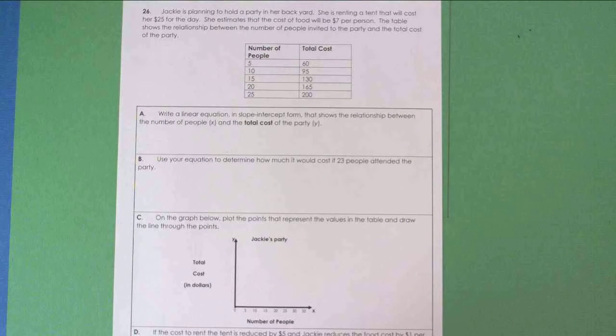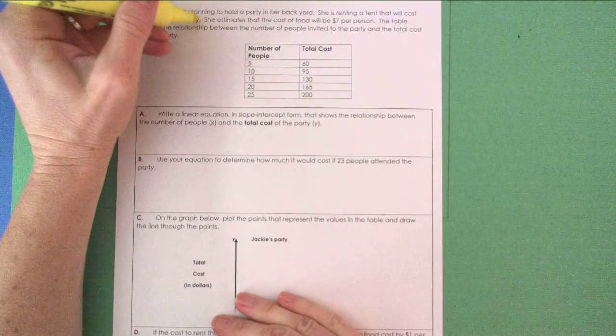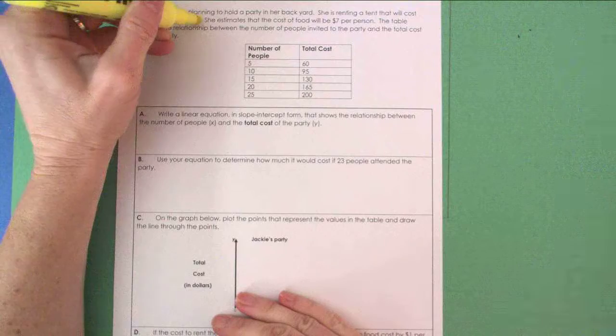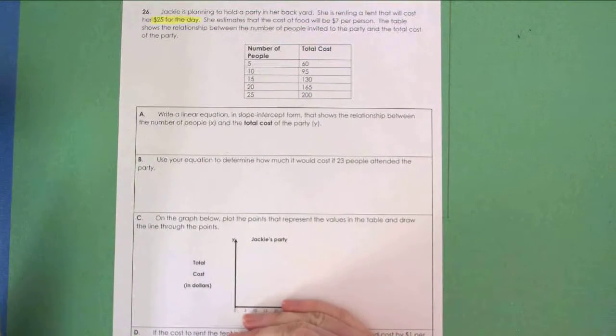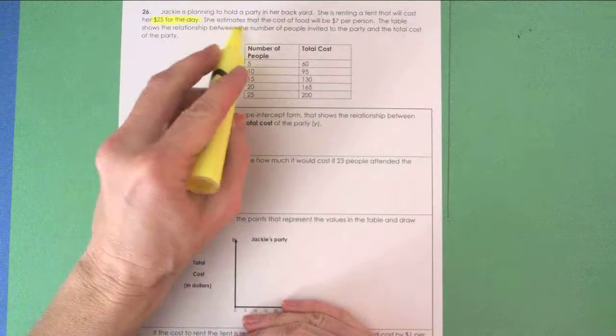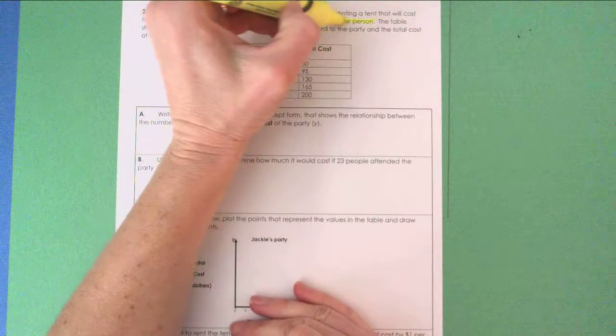Okay guys, we're back for number 26 on Keystone Practice Test Module 2. This is another open-ended problem, so let's go ahead and read it. Jackie is planning to hold a party in her backyard. She is renting a tent that will cost $25 for the day.